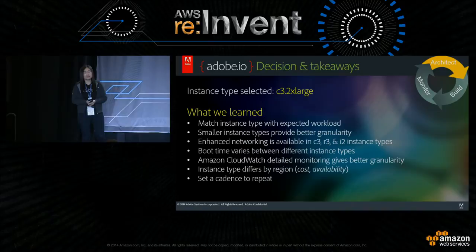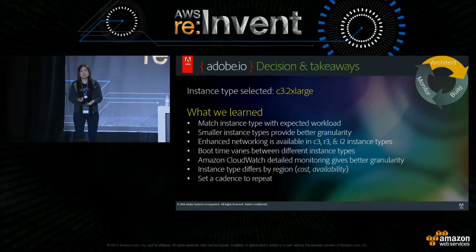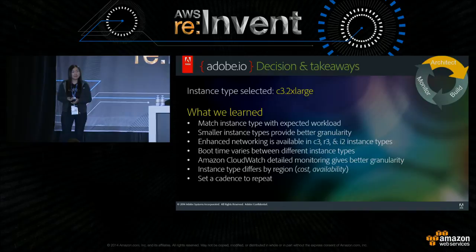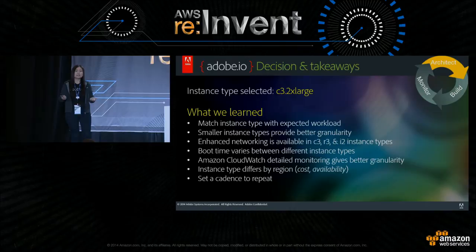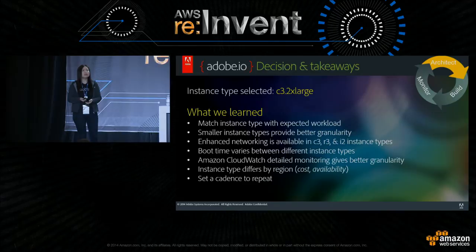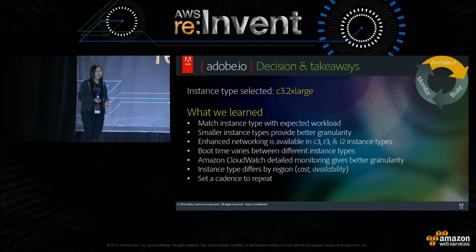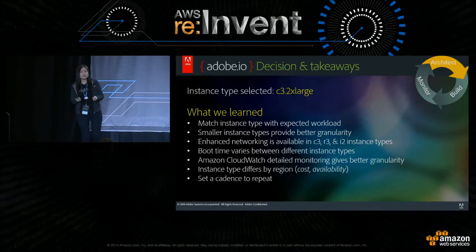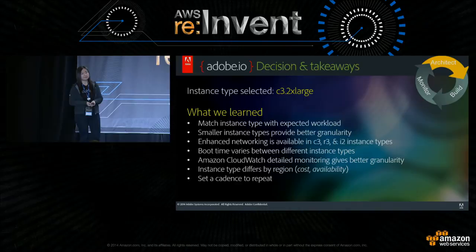We went with the C3 2xlarge. Key learnings from this exercise: first, understand your application characteristics and expected workload, then pick the instance type that really matters based on those factors. Also, enhanced networking is a big thing — if your application requires a lot of network bandwidth, turn on enhanced networking. It's available on certain instance types, particularly in optimized families, and it's free. Finally, note that instance type cost and availability varies by region, so the same instance type may not be available or cost the same in all regions.